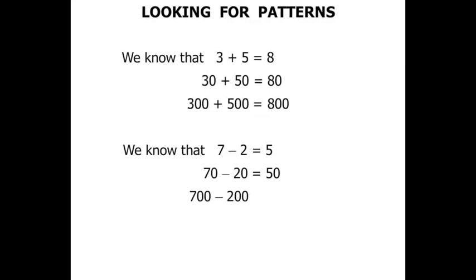700 minus 200 equals 500. Again, we're dealing with hundreds this time. 7 minus 2 gives us 5, and then we put the two zeros on to make it 500.